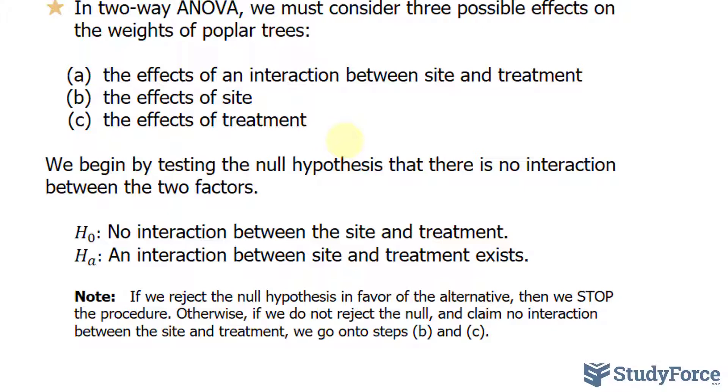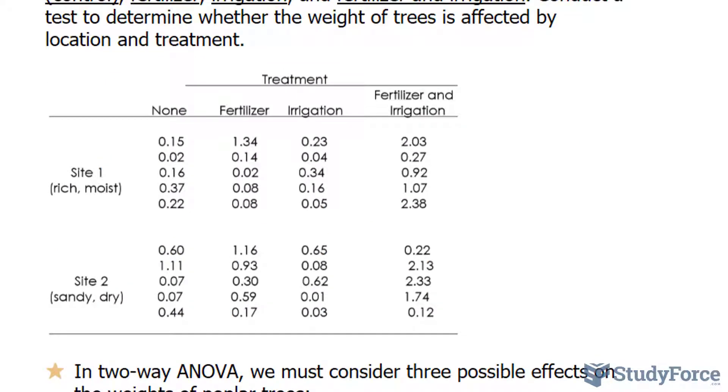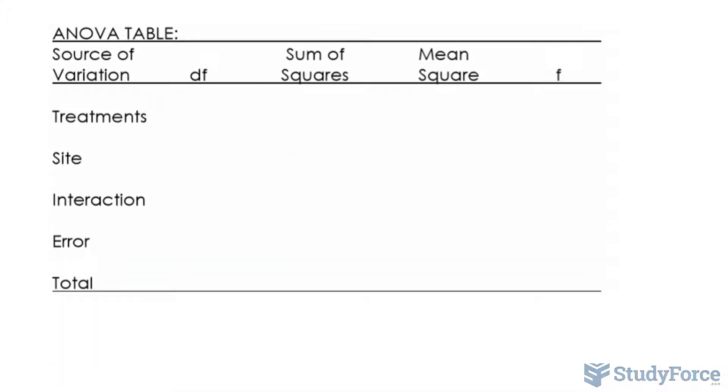I'll let you know ahead of time that we do end up not rejecting the null hypothesis. So expect us to test B and C later on. Now as you would expect, there are a ton of calculations involved with the two-way ANOVA test. For example, you need to find out the sum of this row, the sum of that row, the sum of each column, individual cells, and the entire sum.